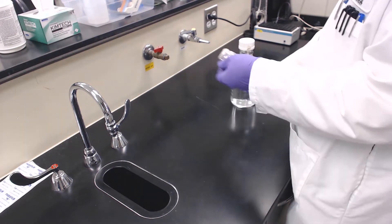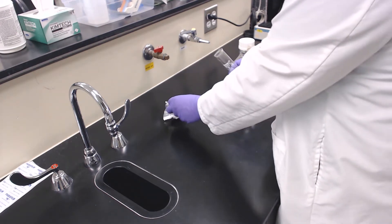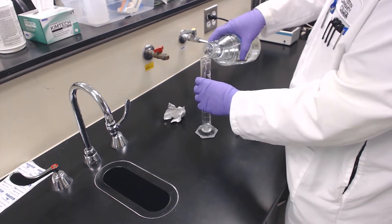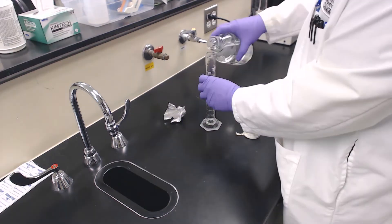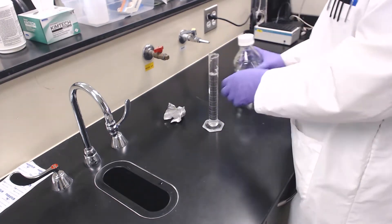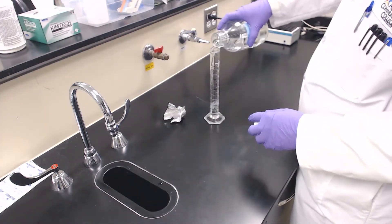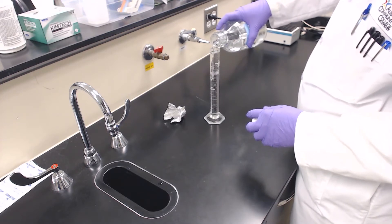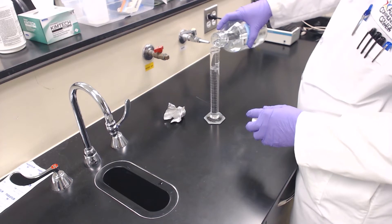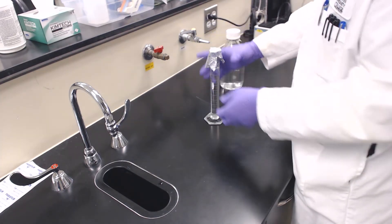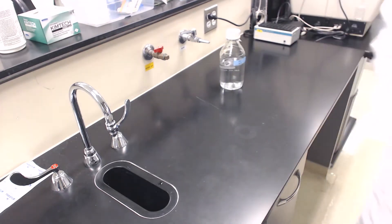Find the cleanest water source and begin with that one. Take your sterile graduated cylinder to the first water source and rinse at least 3 times before collecting 100 milliliters. Bring the sample back to your bench.